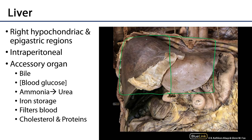The liver produces and secretes bile for the emulsification of fats. It helps to regulate concentrations of blood glucose. It helps to convert ammonia into urea. It serves as a place to store iron for hemoglobin. It's also part of several processes for helping to filter the blood, and it produces cholesterol and proteins, and has a variety of other functions as well.